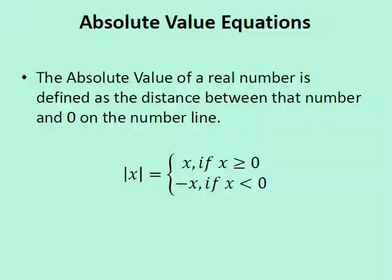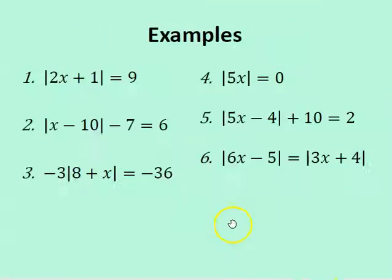In our next examples, we are on number 6. Here we have the absolute value of 6x minus 5 equals the absolute value of 3x plus 4. So you have two different absolute value expressions and we want them to be equal to one another.